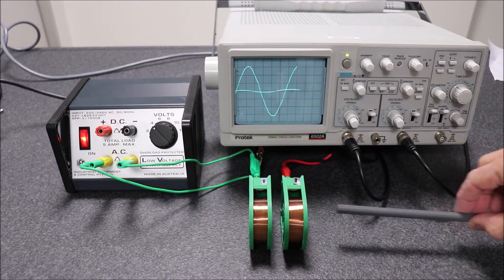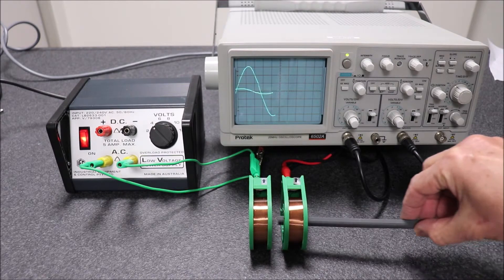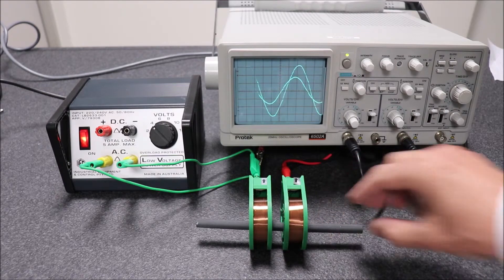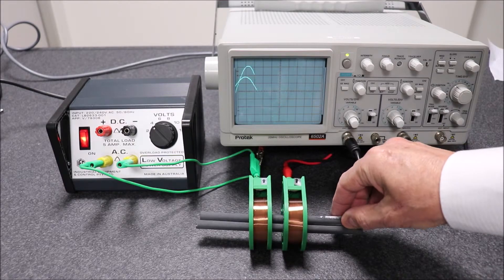Now I'll take the rod out and it goes back to about 0.4 on the secondary and the primary stays the same at 6. There it goes back in, up to 3.4 volts on the secondary. This time I'm adding a second rod and it rises a little bit, it goes up to about 3.6 volts.